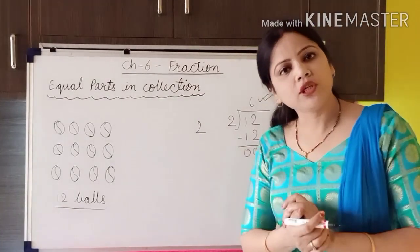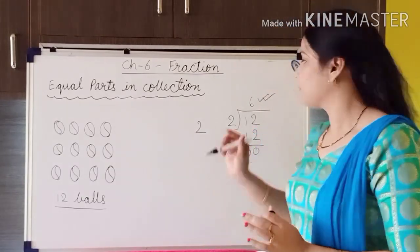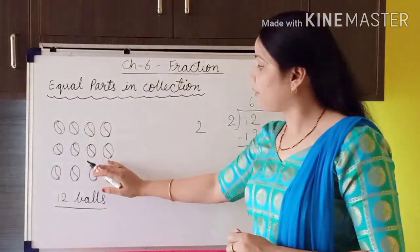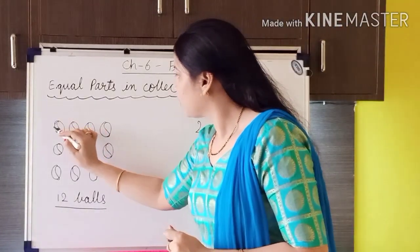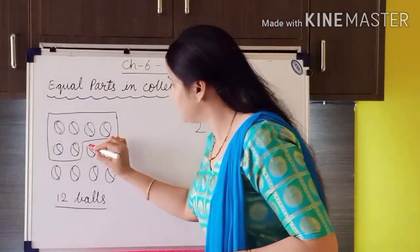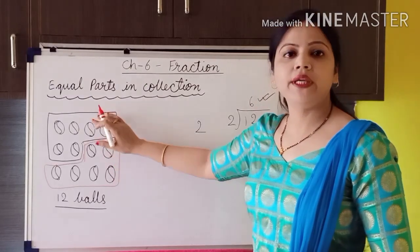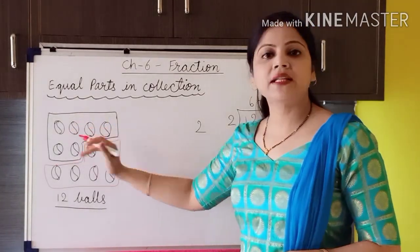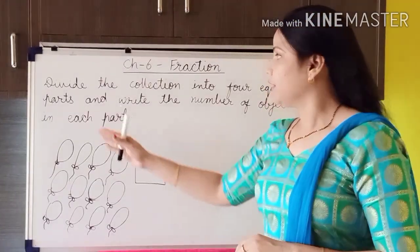That means 6 balls we have to put in each group. If we divide 12 balls among two persons, each person will get 6 balls. So in each part we keep six balls: 1, 2, 3, 4, 5, 6 in one group and 6 in another group. Now you can see I made two equal parts — each part contains six balls. So the answer is: each part contains six balls.